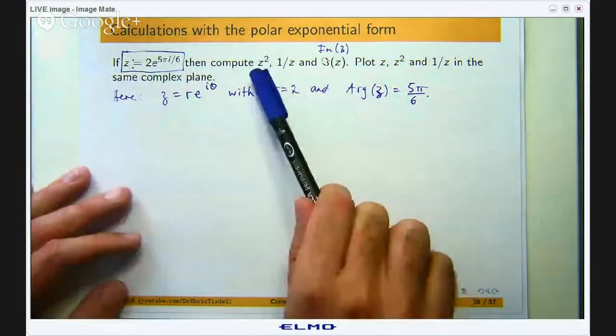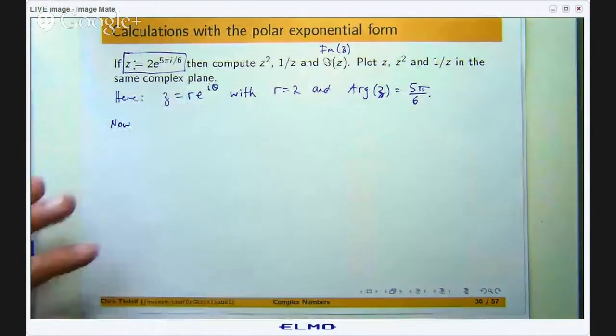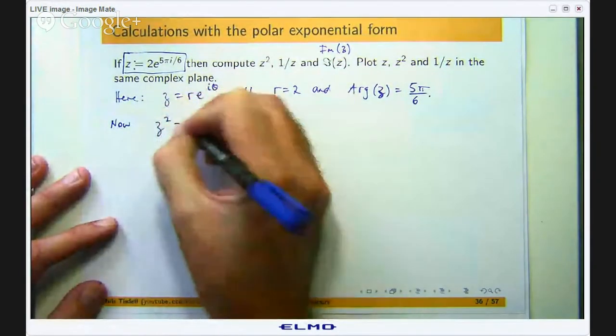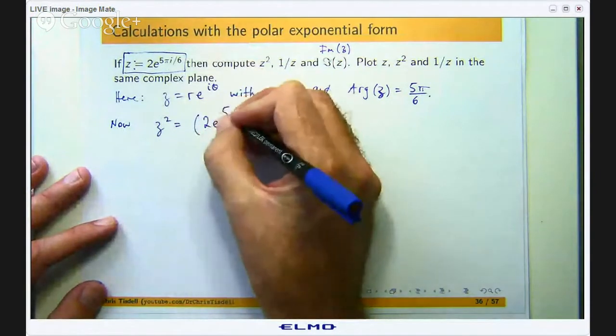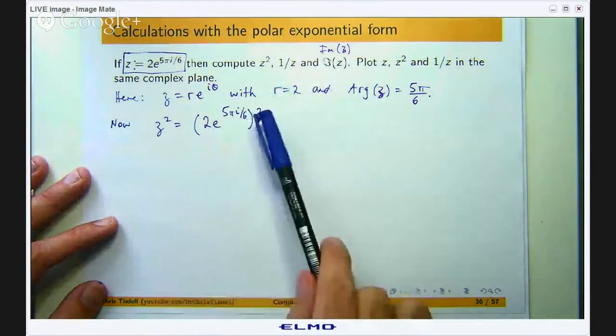Okay so let us compute z². Now to do this we just use our index laws or power laws. So z² is just (2e^(5πi/6))². So let us distribute this squared.